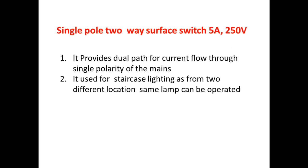This single pole two-way surface switch 5A 250V provides dual paths for current flow. This type of switch is used for staircase lighting. We use this type of switch in two different locations, and from those two different locations a single lamp can be operated.